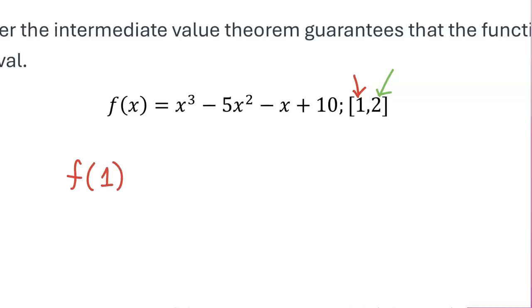The function that we have is f(x) equals x cubed minus 5x squared minus x plus 10. So when we plug in 1 into this function we get f(1) equals 1 cubed minus 5 times 1 squared minus 1 plus 10.